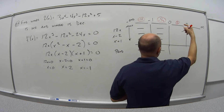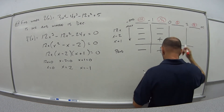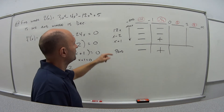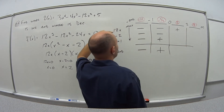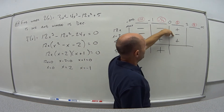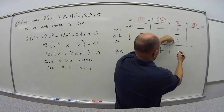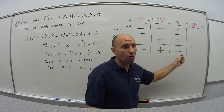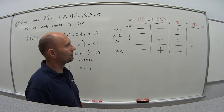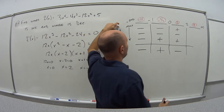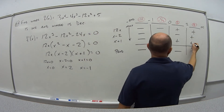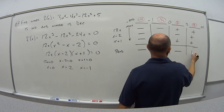For the interval 0 to 2, let's pick x equals 1: 12 times 1 is positive; 1 minus 2 is negative; 1 plus 1 is positive. Positive times negative is negative; negative times positive is negative. For the interval 2 to infinity, pick x equals 5: 12 times 5 is positive; 5 minus 2 is positive; 5 plus 1 is positive. Positive times positive times positive is positive. The bottom row alternates: negative, positive, negative, positive — no matter how many intervals.